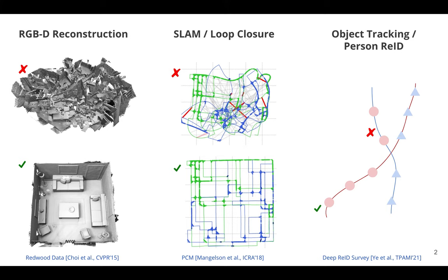Shown here are a few examples that use data association in their pipelines. Take for example, RGBD reconstruction. The goal here is to take multiple images, extract features in each of those images, and then match those features across images. Once those features are matched, we can use that information to stitch together these different RGBD frames and end up with some reconstruction as shown here in the bottom left.